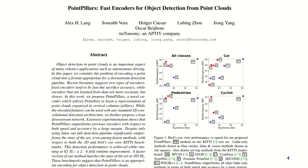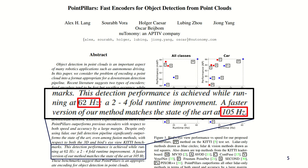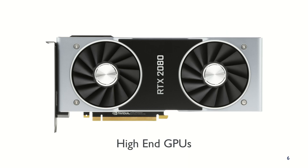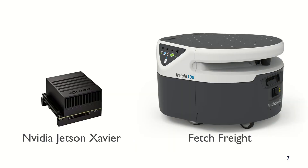Sparse Point Pillars is based on Point Pillars, a popular 3D object detector famous for being fast. However, these runtime numbers are assessed on high-end desktop GPUs. As roboticists, we want the runtime and performance of Point Pillars, but run on embedded ML accelerators or robot CPUs.